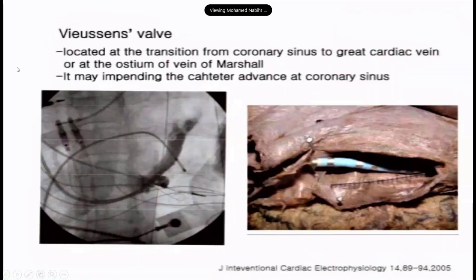Another valve is located at the transition from the coronary sinus to the great cardiac vein. It might impede catheter advancement within the coronary sinus.